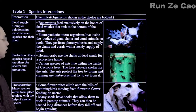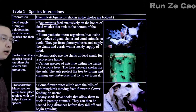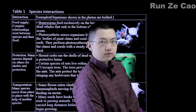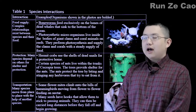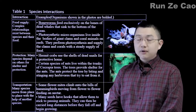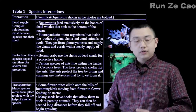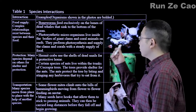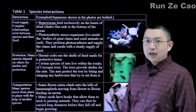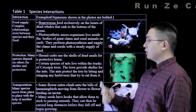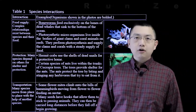Bone worms feed on the bones of dead whales. Whale falls are quite an important part of deep sea food supplies. First, you have a mass of various eels and other similar scavengers that bore into the body and eat up all the meat. And then you have the bone worms that feed on the bones — they drill into them to get at the marrow.